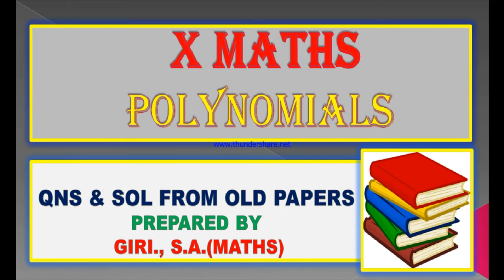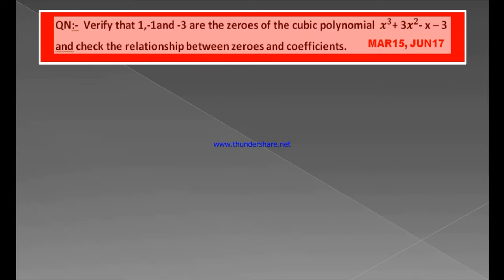Hi, hello, this is Giri, teaching 10th Mathematics, the chapter Polynomials. Questions and solutions from old papers. Here is the first question: Verify that 1, minus 1, and minus 3 are the zeros of the cubic polynomial x cubed plus 3x squared minus x minus 3, and check the relationship between zeros and the coefficients. This question appeared in March 2015 and June 2017, and is also given in the recent SCRT model paper.